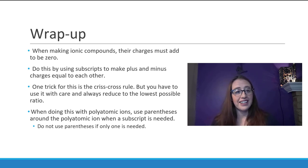So let's summarize what we learned today. When making ionic compounds, their charges need to add to be zero. You do this by using subscripts to make the pluses and the minus charges equal to each other. One trick for doing that quickly and easily is the crisscross rule, but you're going to need to be really careful with it to always reduce to the lowest possible ratio. When doing this with a polyatomic ion, you use parentheses around the polyatomic ion if a subscript is needed. If its subscript isn't needed then you don't need to put parentheses around it.